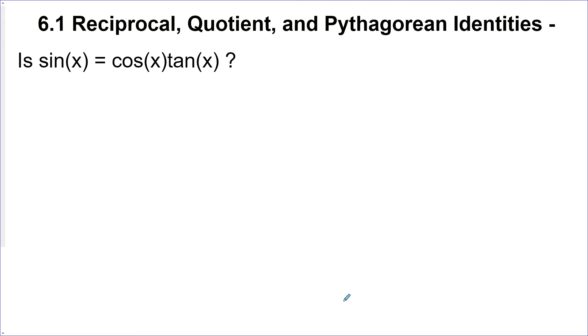6.1: Reciprocal, quotient, and Pythagorean identities. Let's start off with: is sine x equal to cos x times tan x?